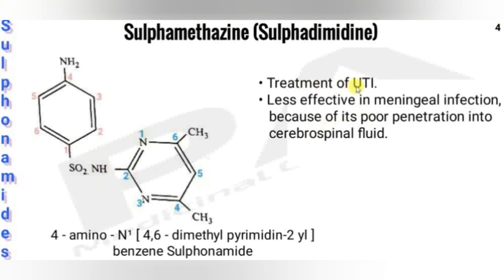Sulfamethazine is used in the treatment of urinary tract infections. It is less effective in meningeal infections because of its poor penetration into the cerebrospinal fluid.